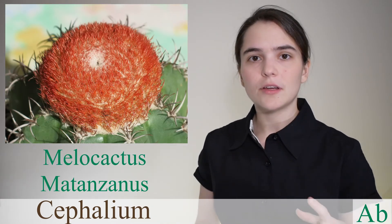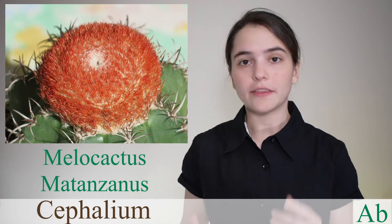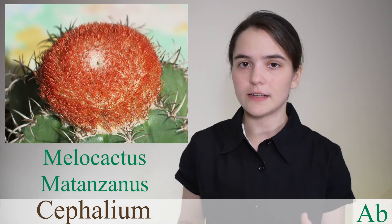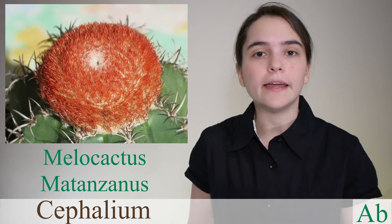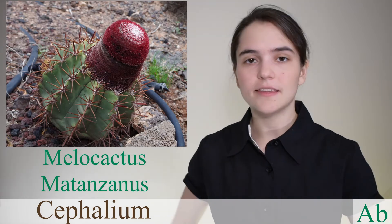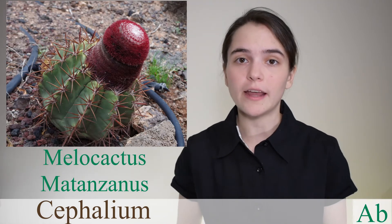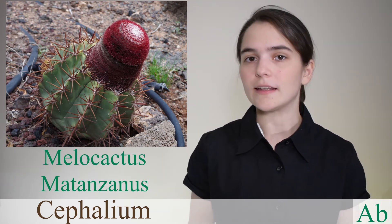Cephalium is a frequently brightly colored structure of wool and bristle at the growing end of some cacti. It is most commonly found on cacti of the genus Melocactus and can take on a number of different colors, forms, and shapes. The cephalium will only begin growing after a cactus has reached a certain age or size. Once flowering begins, the flowers will form from the cephalium.